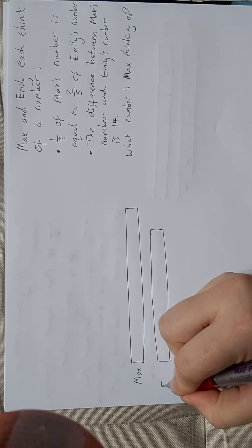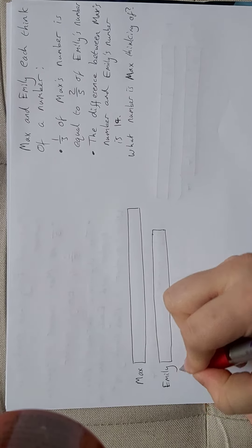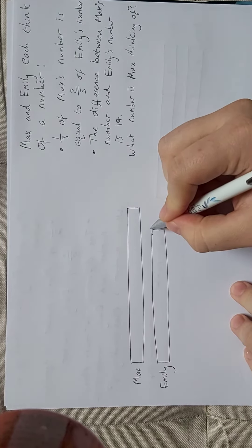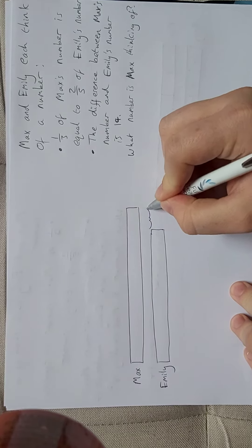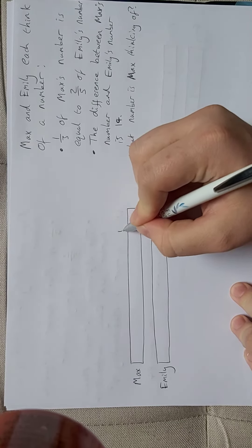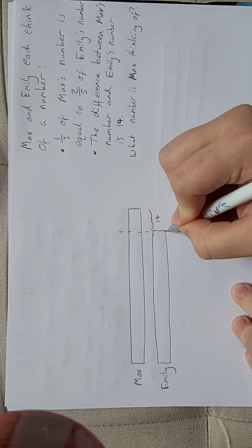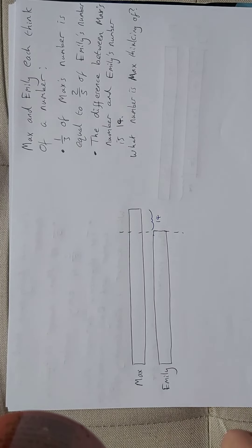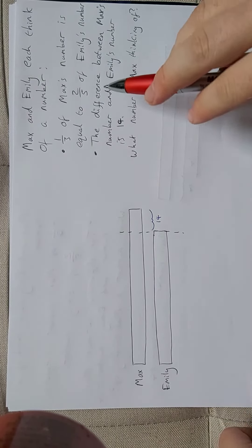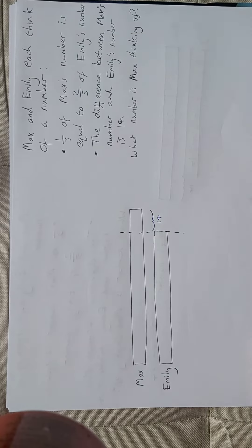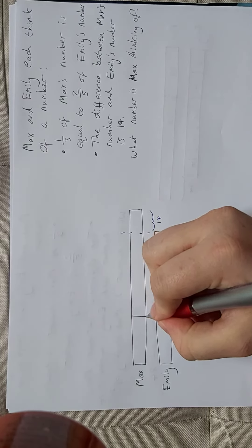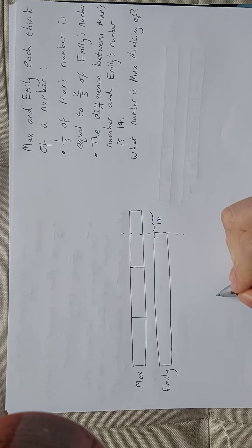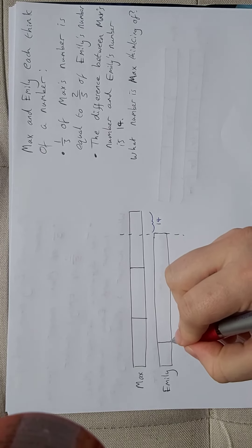That's Max, that's Emily. We know that the difference between their numbers is 14, so I'll mark that difference. We're told one-third of Max's number equals two-fifths of Emily's number, so I'm going to split Max's number into thirds and Emily's number into fifths.